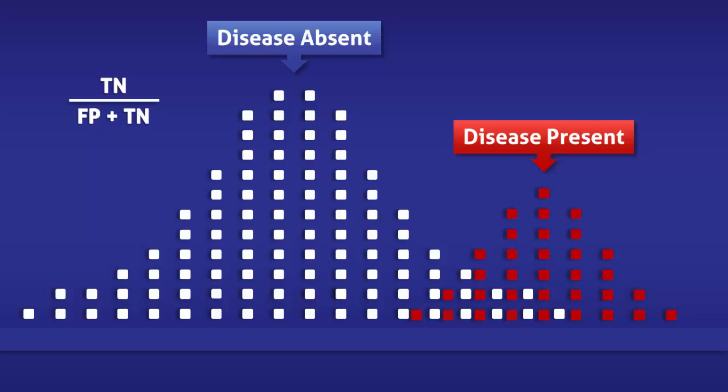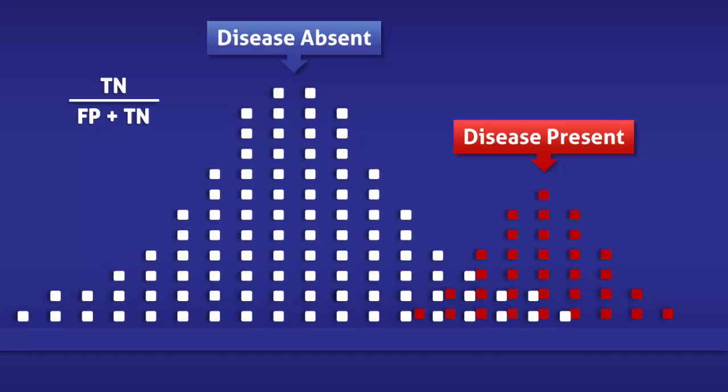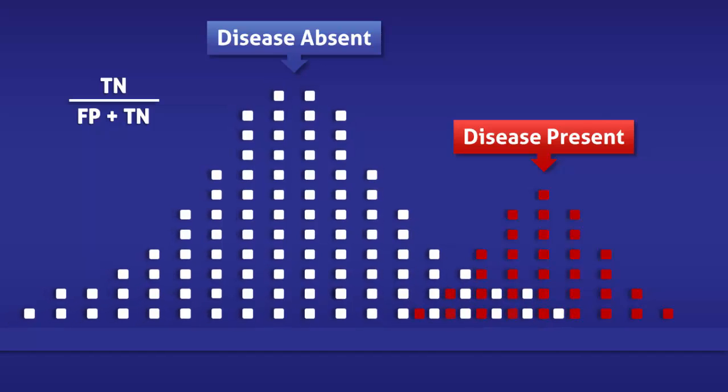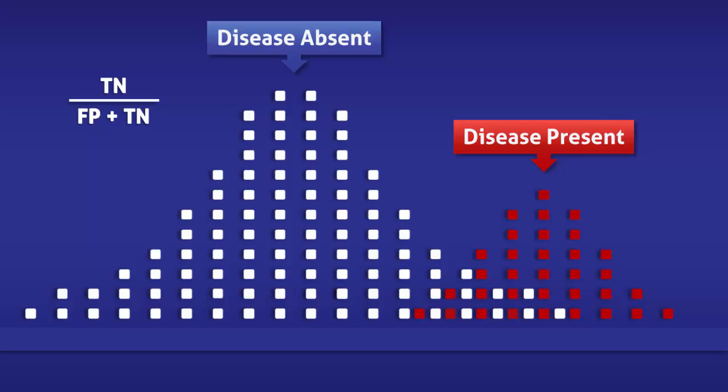The red squares represent people with it, and the white squares represent people without it. Since specificity only takes into consideration people without the condition, we are going to focus on the white squares.